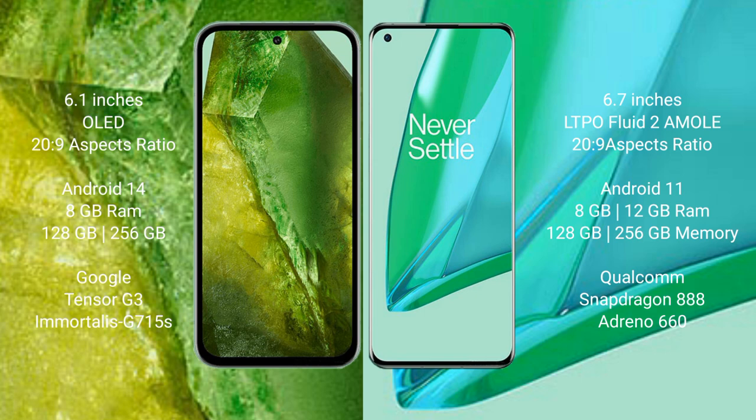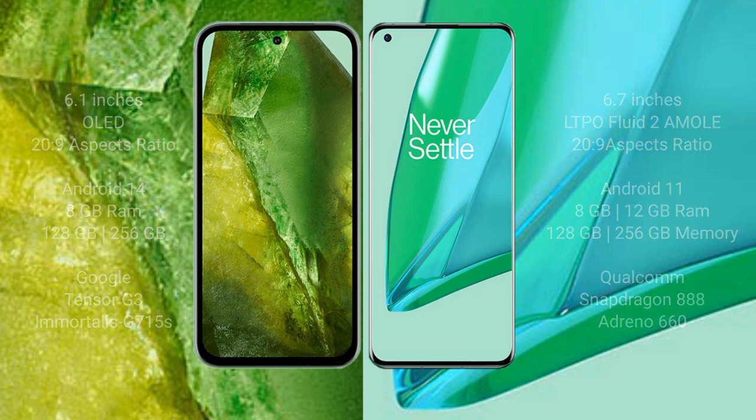Google Pixel 8a comes with 8GB RAM, 128GB or 256GB internal storage, Google Tensor G3 processor, and GP615A GPU. OnePlus 9 Pro comes with 8GB or 12GB RAM, 128GB or 256GB internal storage, Qualcomm Snapdragon 888 processor, and Adreno 660 GPU.